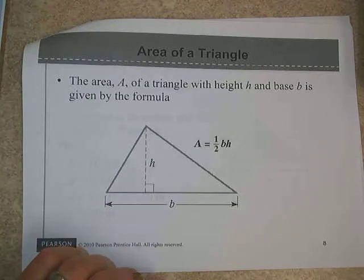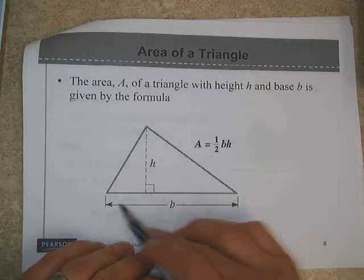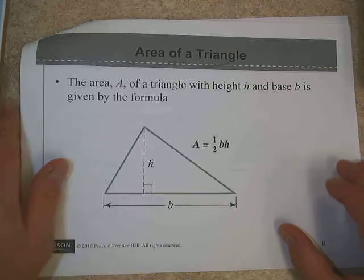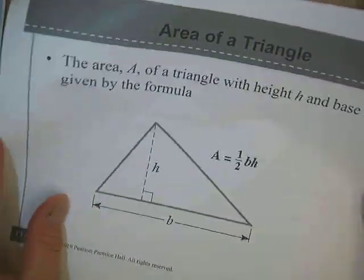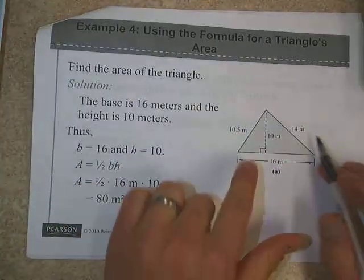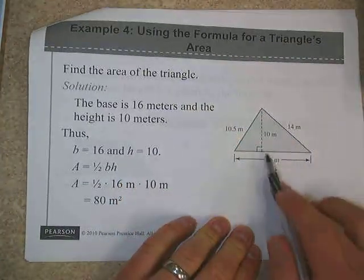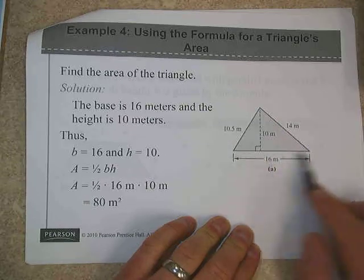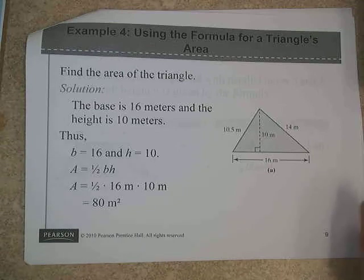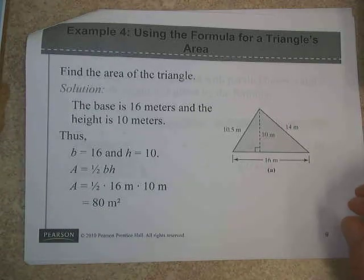We also have a means to find the formula for the area of a triangle. A triangle is always going to be 1 half times base times height. We have a base here. The height, of course, again, needs to be perpendicular to the base. And if we know those two pieces of information, even if there's extraneous information like the 10.5 and the 14, all we need here is the 16 and the 10. Those are the base and the height. The height is always going to be perpendicular to the base, as I mentioned.